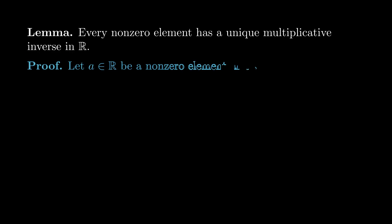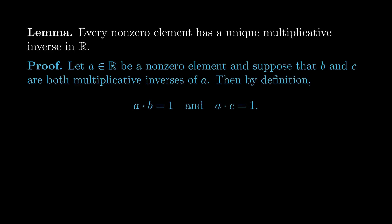So let a in the real numbers be a non-zero element, and suppose that b and c are both multiplicative inverses of a. It's always a good idea to use the definitions of any terms in the theorem or lemma to translate our hypothesis into more symbolic statements. So by the definition of the multiplicative inverse, ab = 1, and ac = 1.